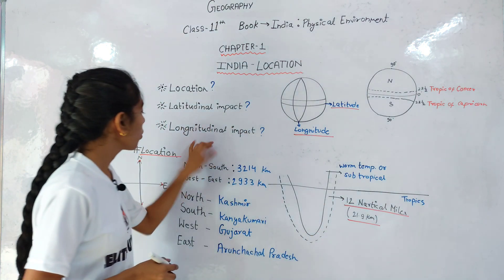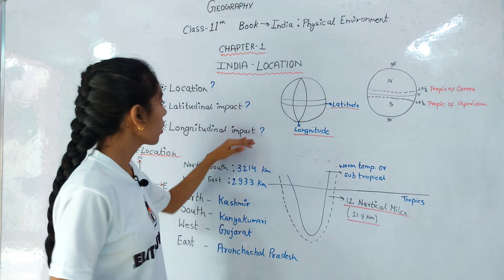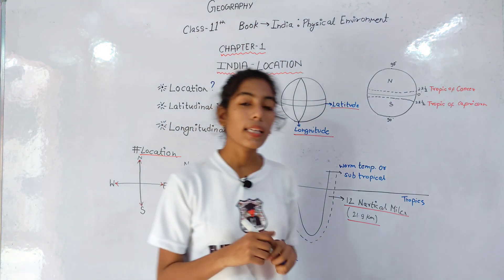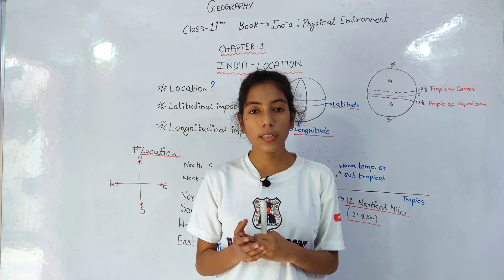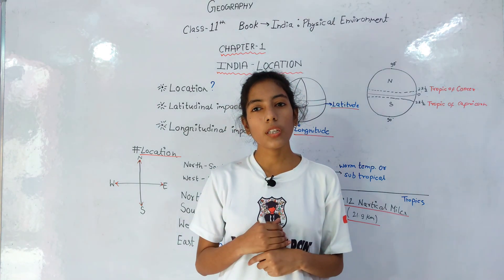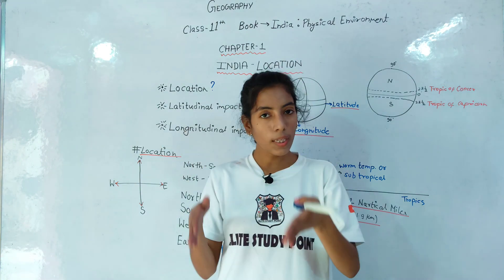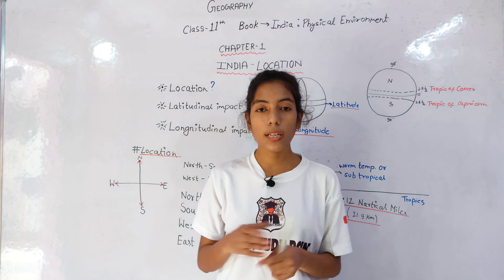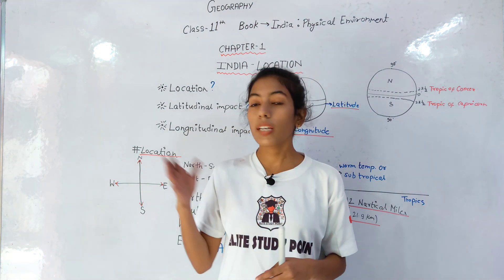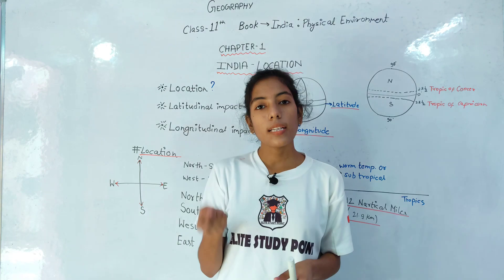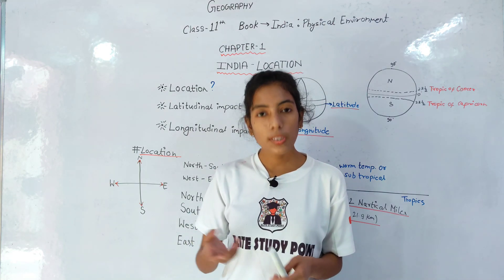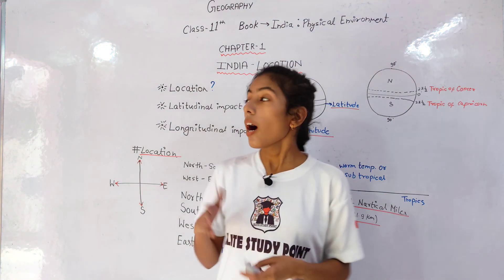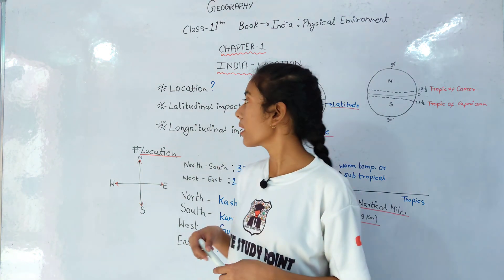If we talk about location, we will start with the basic concept: what is latitude and longitude? If you look at the map or the globe, you have seen imaginary lines. Those lines are not real on our Earth, but you can see them on maps and globes. So these lines are longitude and latitude. We have created them so that if we want to find a location on Earth, we can easily get to it. What is the difference between latitude and longitude? We will see this.